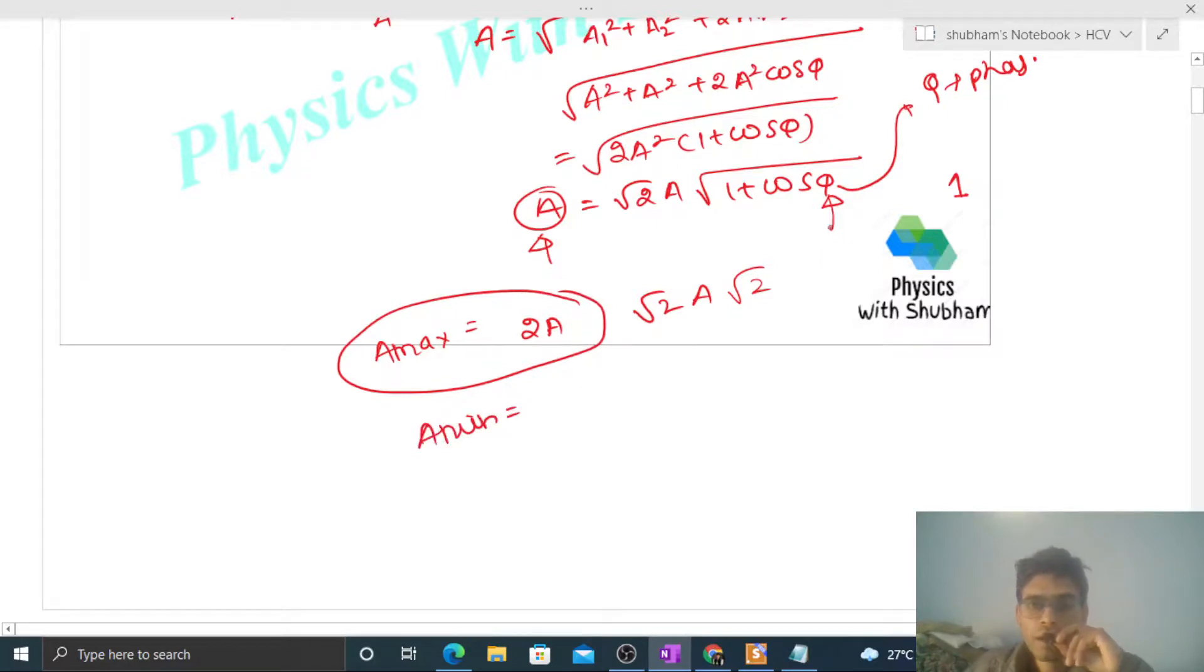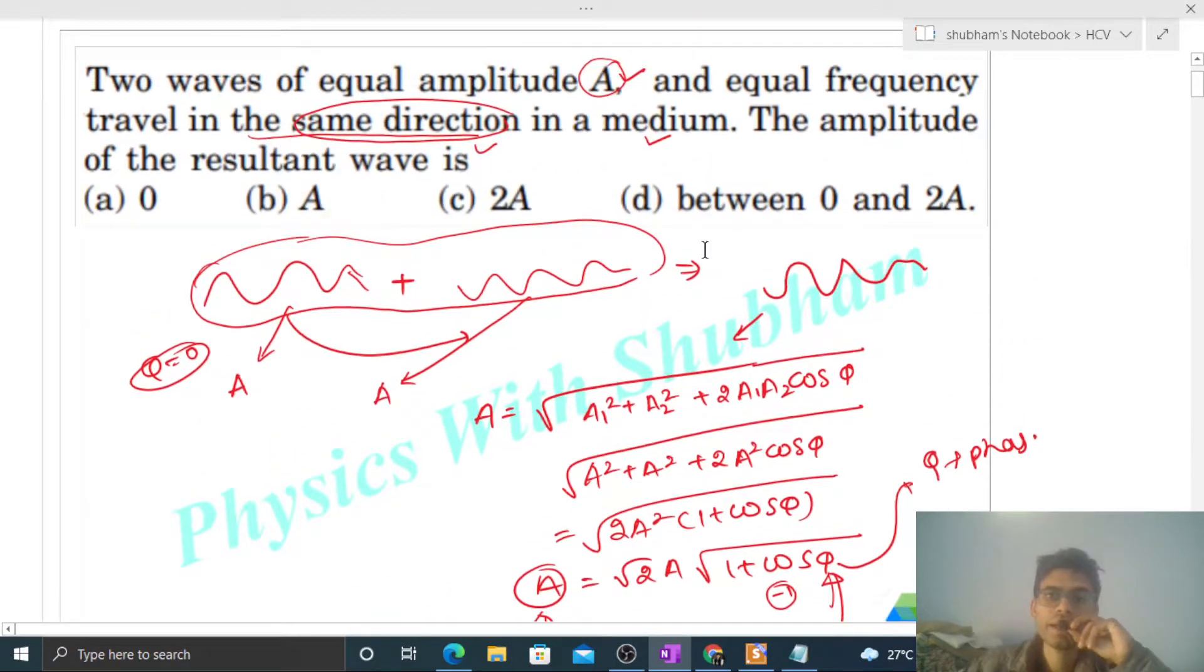Minimum value—how will you find it? Minimum value of cos phi is minus one, so one minus one becomes zero. So it will be zero. So the amplitude of the resultant wave can be anything between zero to 2A.